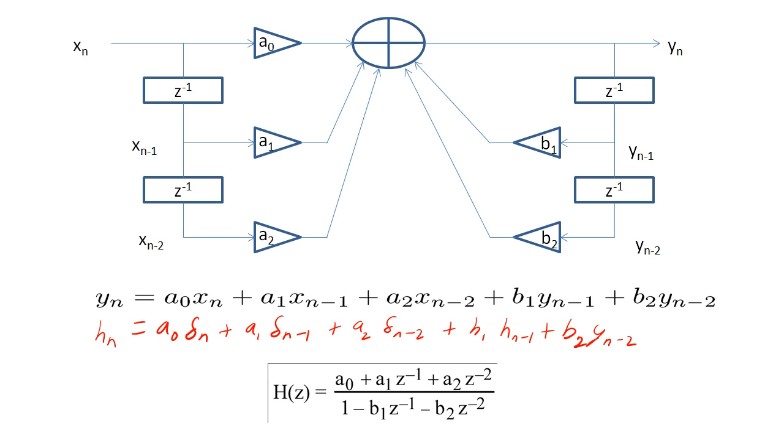We call h of z the transfer function of the filter. We calculate h of z for four reasons. First, it allows us to find a compact expression for the impulse response quickly.